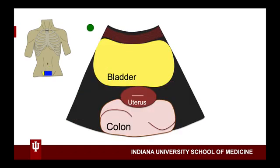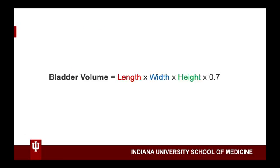After completing your sagittal measurement, you will rotate the probe counterclockwise so that the marker dot is pointed towards the patient's right. You will then drag the probe up and down until you again find the greatest dimensions of the bladder. Once you have done this, freeze the image. Select the caliper or measure icon and measure the bladder to obtain its height and its width. Once you have obtained these three measurements, get out your calculator and plug them into our equation to determine the bladder volume.